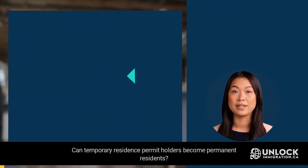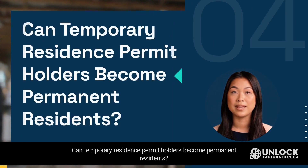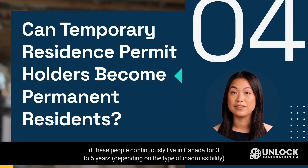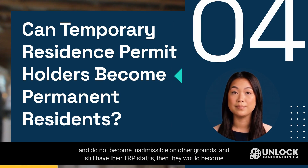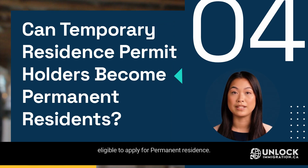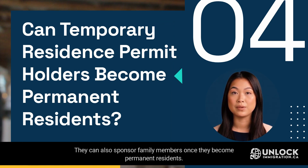Can Temporary Resident Permit holders become permanent residents? If these people continuously live in Canada for three to five years, depending on the type of inadmissibility, and do not become inadmissible on other grounds, and still have their TRP status, then they would become eligible to apply for permanent residence. They can also sponsor family members once they become permanent residents.